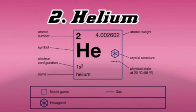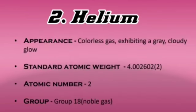The second element is Helium. Helium is a colorless, tasteless, non-toxic inert monatomic gas. It is the first inert noble gas group in the periodic table. Its standard atomic weight is 4.002602. Its atomic number is 2, and it is in group 18, noble gas.